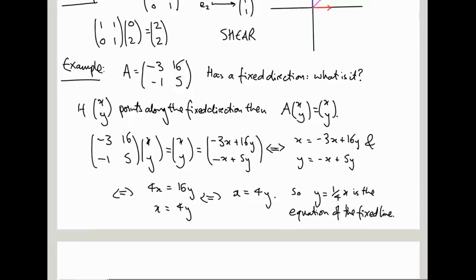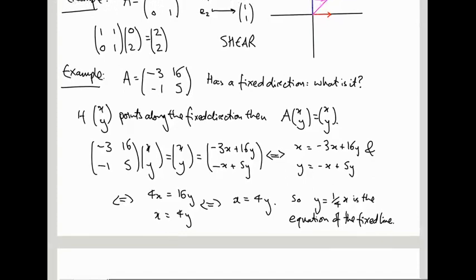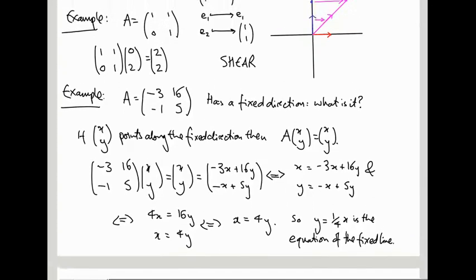Well, that's great. That tells us an equation for the fixed line, the fixed direction. So y equals 1 over 4x is the equation of the fixed line. So if this is a shear, it's a shear along the y equals 1 over 4x line. So not every matrix is going to have a fixed direction. That's quite a special thing, having a fixed direction. But when it happens, it tells you something about the underlying geometry. Okay, in the next video, I'm going to talk about 3x3 matrices, higher dimensional spaces.